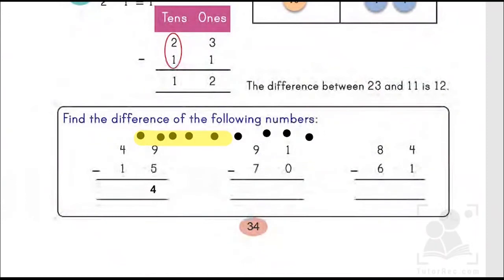Same is the case with 4 minus 1. What we are supposed to do is we have to put 4: 1, 2, 3, 4. We have to cut 1 only, so the remaining ones are 3. So 3 is the right answer over here. This means 49 minus 15 is 34, or the difference between 49 and 15 is 34.